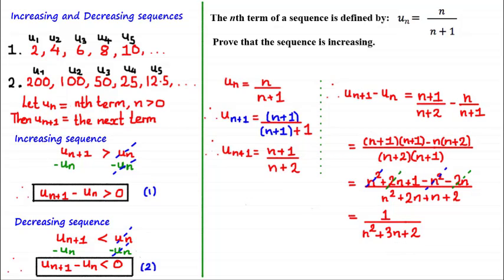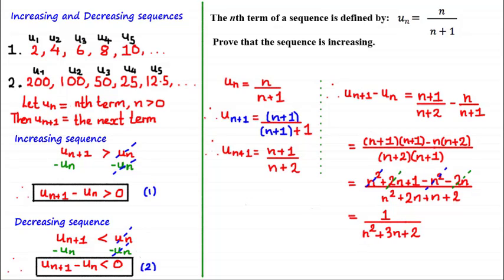We've found the difference and now need to assess whether it is greater than zero. The numerator equals 1, which is greater than zero. In the denominator, n squared must be positive, 3n must be positive because n is a positive integer, and 2 is greater than zero. Since all individual terms are greater than zero, the fraction is greater than zero, and therefore the sequence u sub n is increasing.